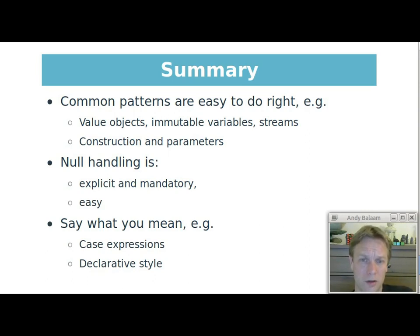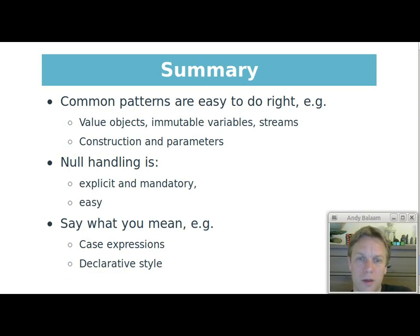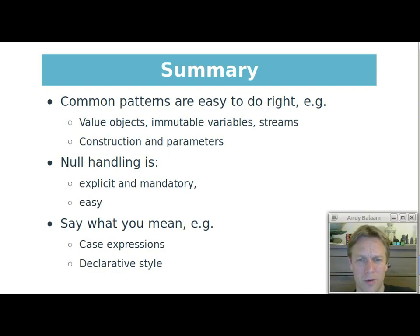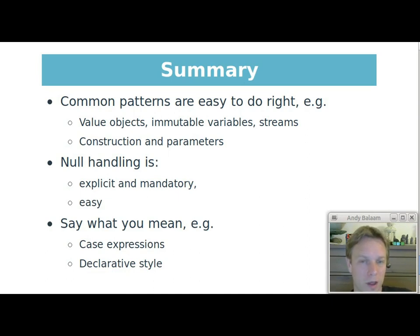Other things like constructing objects — having default arguments, having clarity around construction — it's easy to do things in a way that I feel is good. Secondly, null handling: handling nulls is mandatory, and when you do it you have to be explicit. There is actually a way of saying 'I don't care, I know this might be null but just pretend it never will be and throw if it is' — you say that by adding an exclamation mark, which looks really awful and makes you feel bad. And that's good too, but it's explicit. As in the example I showed, it's also quite easy and doesn't take up a huge amount of code to handle nullness and just do the right thing, like with the Elvis operator.